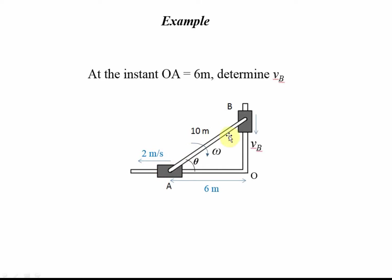I want to find the velocity of VB, collar B, given that the velocity at A at this current time is 2 meters per second, and the distance between A and O is 6 meters. So how do we find the velocity of B?